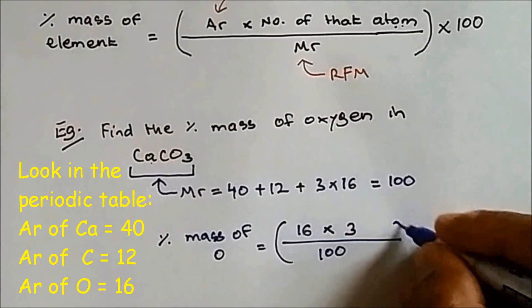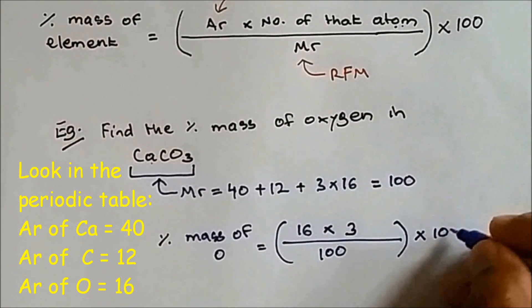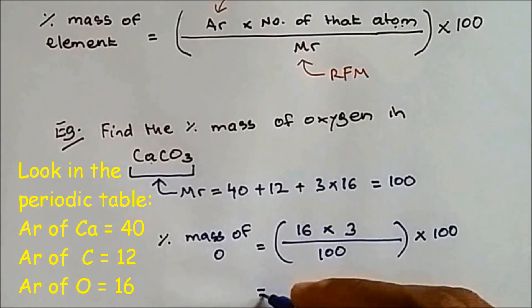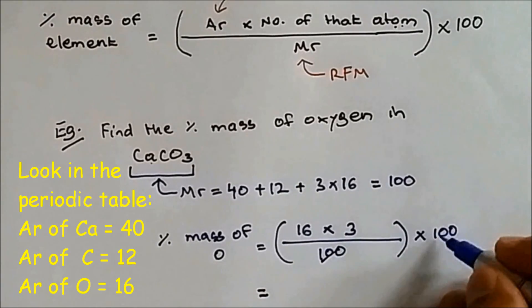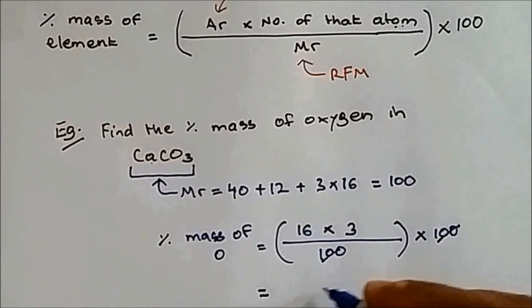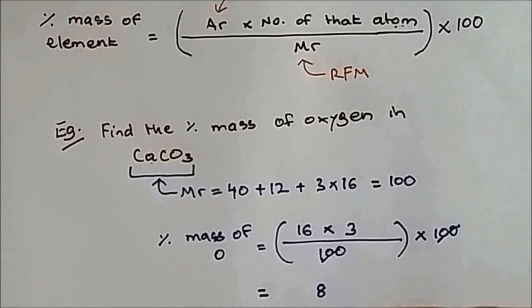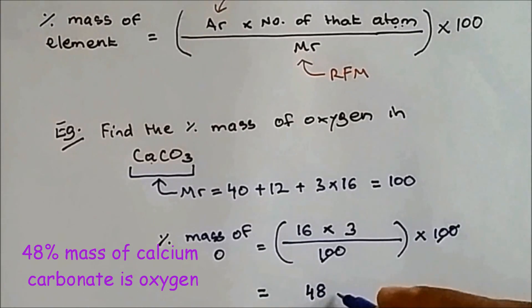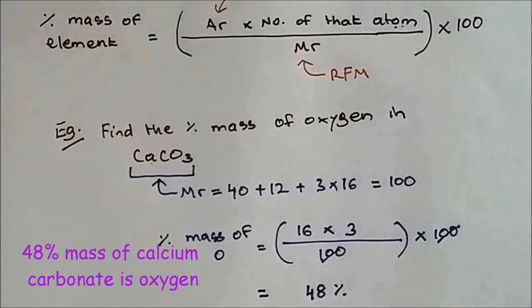The whole thing we have to multiply by 100 because we have to give that in percentage. So this and this cancel out, so the answer is 8 times 4, so the answer is 48%. So 48% of the mass in calcium carbonate is oxygen.